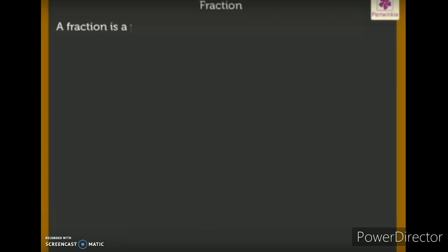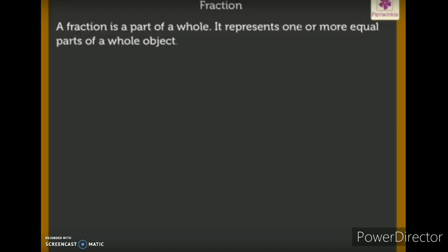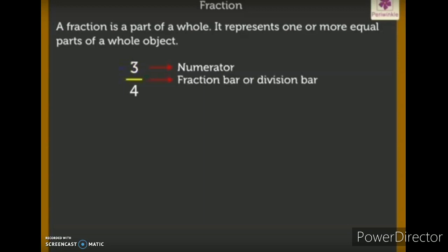A fraction is a part of a whole — it represents one or more equal parts of a whole object. Here you can see the fraction 3 by 4. The 3 is called the numerator — it is the number of equal parts. The bar in between is called the fraction bar or division bar, and 4 is the denominator, which shows the total number of parts a whole is divided into.